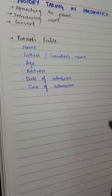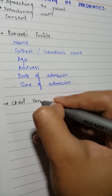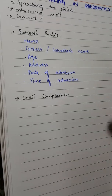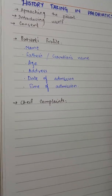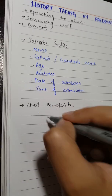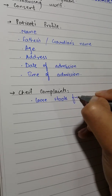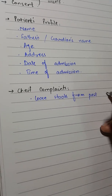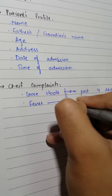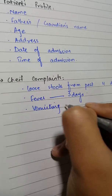After this, you ask the patient for the chief complaints or presenting complaints. You have to write them in chronological order in which the patient tells you — first onset, then second, then third. For example, a patient who has loose stools from the past four days, fever for three days, and history of vomiting for one day.